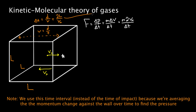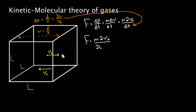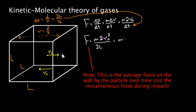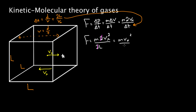Substituting delta t = 2l/vx into the force expression: F = m times 2vx divided by (2l/vx). Dividing by vx on the bottom moves it to the top, giving F = mvx²/l. The particle doesn't have to be moving purely in x — it may have a total velocity with x as just one component, but taking the x component gives the force contribution on this particular wall. This is the force on the wall from one particle.